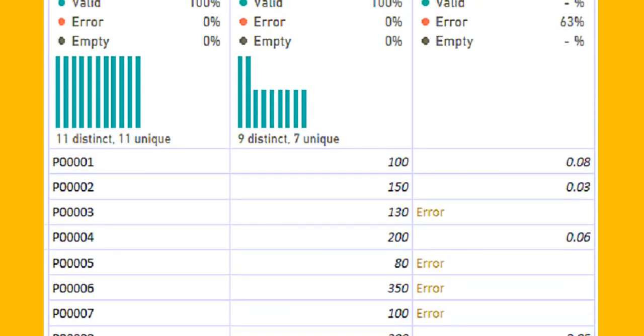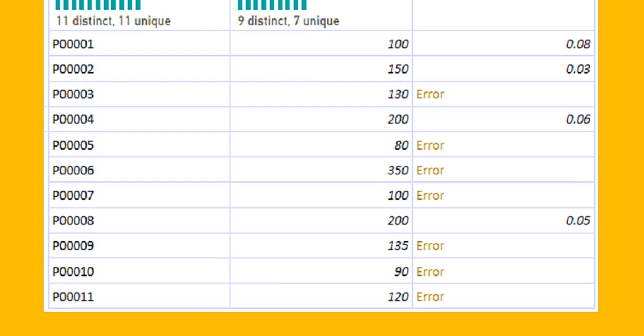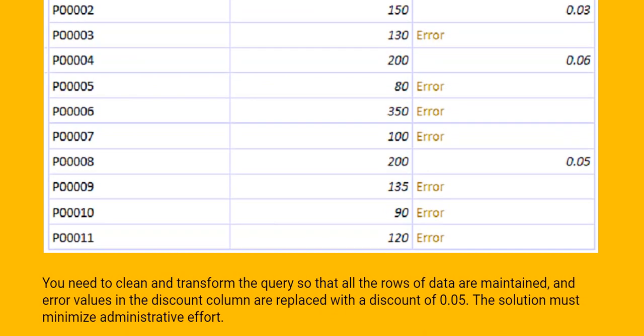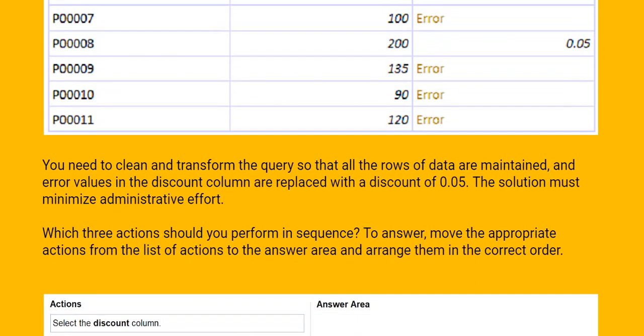See the given exhibit. See this table given. You need to clean and transform the query so that all the rows of the data are maintained and error values in the discount column are replaced with the discount of 0.05. The solution must minimize administrative effort.